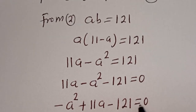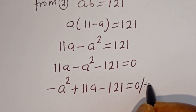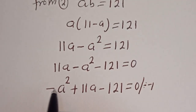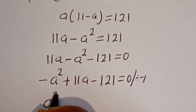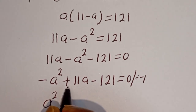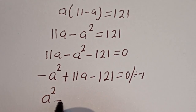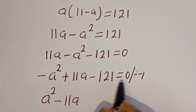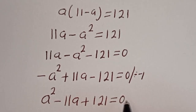Now we can divide all terms by minus 1. Minus A squared divided by minus 1 gives A squared. 11A divided by minus 1 gives minus 11A. And minus 121 divided by minus 1 gives plus 121, equal to 0.